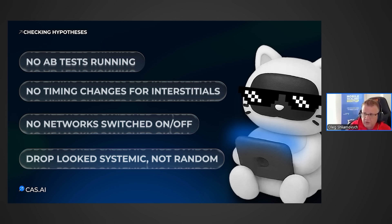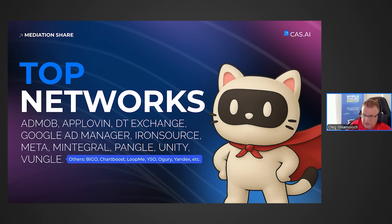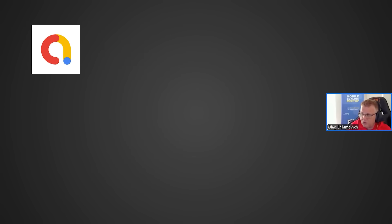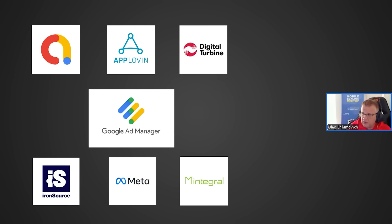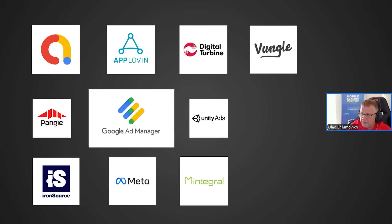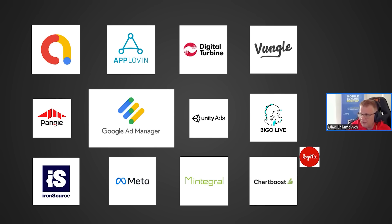We tested a lot of hypotheses: A-B tests, timing adjustments, enabling and disabling networks. None of it helped. We had to dig deeper and looked at the distribution across networks. In any properly built mediation, you'll always find AdMob, AppLovin, DT, Google Ad Manager, IronSource, Meta, Mintegral, Pangl, Unity, and Vungl. We also have Bigo, Chartboost, LoopMe, ISO, and others.